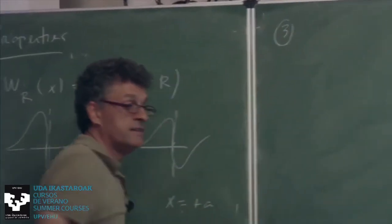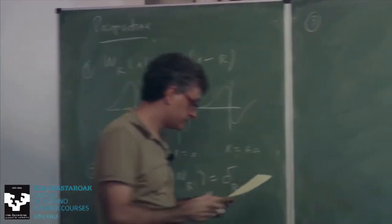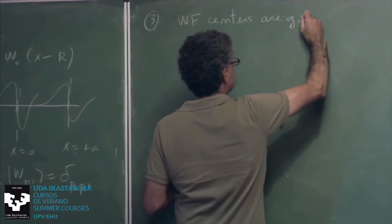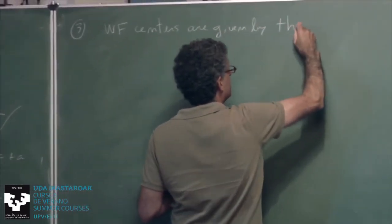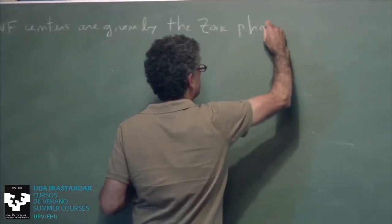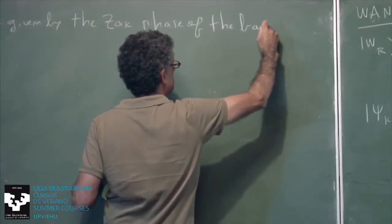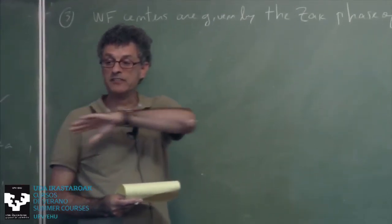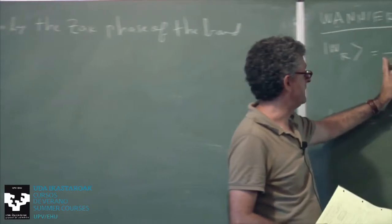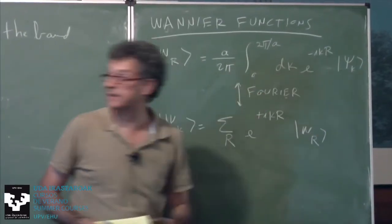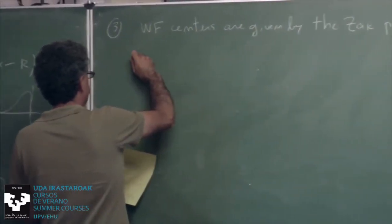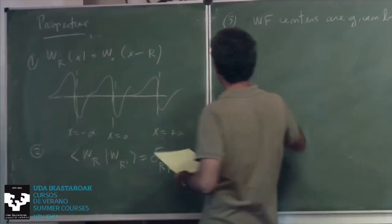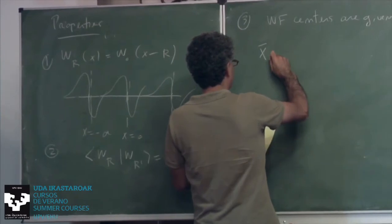The property I really want to focus on is the third one: the centers of Wannier functions are related to the Zak phase. The Zak phase is a global property of the entire band, and the Wannier function was also obtained by integrating over all k, so it is also a global property of the band. It turns out that if you take the center of mass of a Wannier function — which is well-defined since they are localized, unlike the extended Bloch functions — we can define their center of mass.